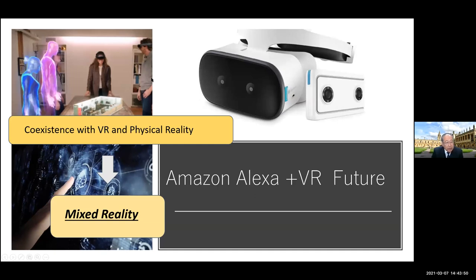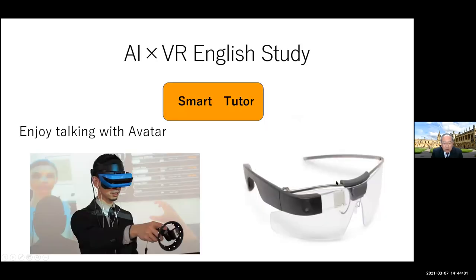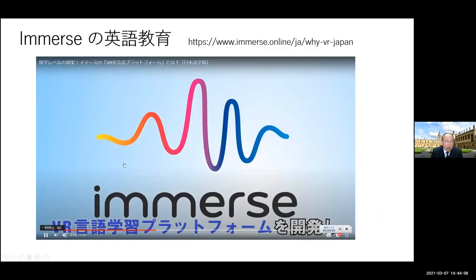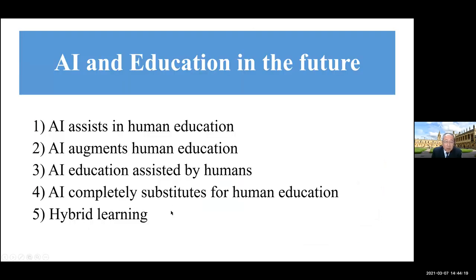Now moving on to coexistence with VR and physical reality — I think this is a very useful tool, even during COVID-19. Smart glasses of only 150 grams seem to be coming now. Immersed English Education is a very important platform — this company is promoting how students could learn English with VR. AI and education in the future includes: AI assisting human education, AI augmenting human education, AI education assisted by humans, and AI completely substituting for human education — it's a sort of hybrid learning. It depends on how AI progresses in the future.